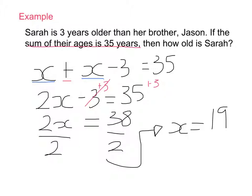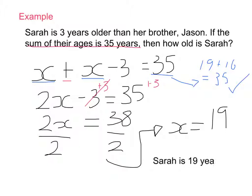Step four: check our solution. If Sarah's age is 19 and Jason is three years younger, that's 16. Quick check: 19 plus 16 equals 35 — correct, which is in line with our original answer, so we've done it correctly. Step five: since it's a word problem, we need to write a word answer. Sarah is 19 years old.